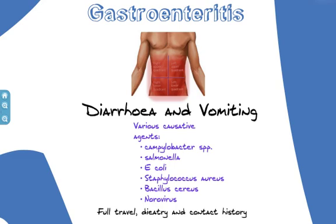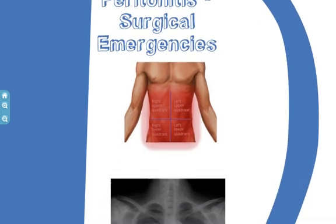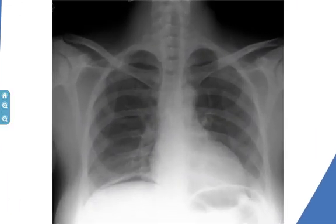A full history should be taken relating to travel, food eaten, and if they have been in contact with anyone with a similar illness. A potentially fatal cause of an acute abdomen that may require surgery is perforation. Perforation of an ulcer or inflamed appendix, diverticulum or bowel can lead to generalised peritonitis. Signs of shock, prostration, absent bowel sounds and abdominal rigidity may be present. In perforation, an erect chest x-ray may show gas under the diaphragm. Perforation requires immediate shock management and surgery to fix the perforation.